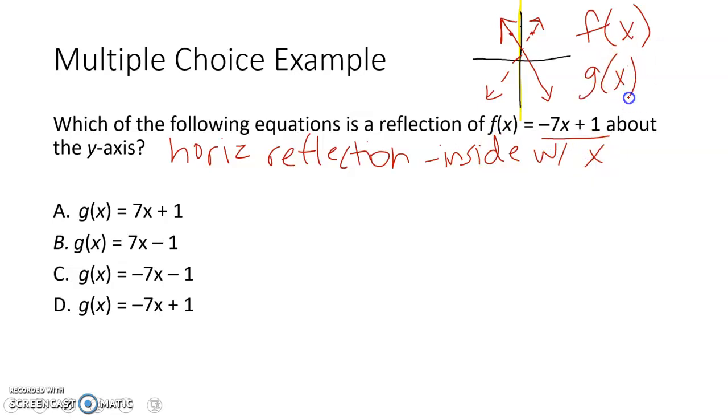So g of x would be equal to f of negative x. With reflections, you either multiply the negative on the outside or you multiply the negative on the inside. In this case, it's multiplying the negative on the inside.